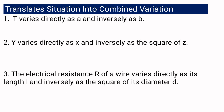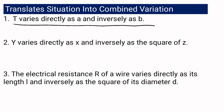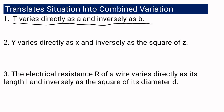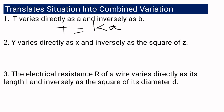Let us look at different statements involving combined variation. For number 1, we have 't varies directly as a and inversely as b.' If it is directly, we multiply; if it is inversely, we divide. Therefore, t varies directly as a and inversely as b is written as t equals ka over b.